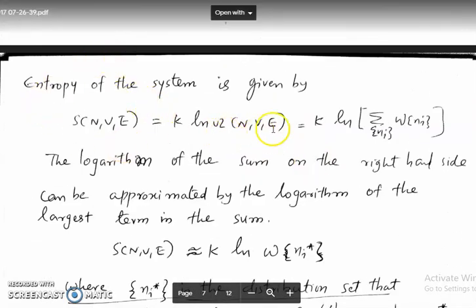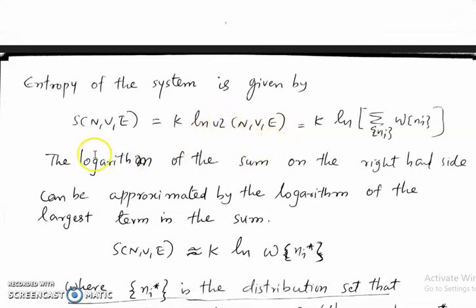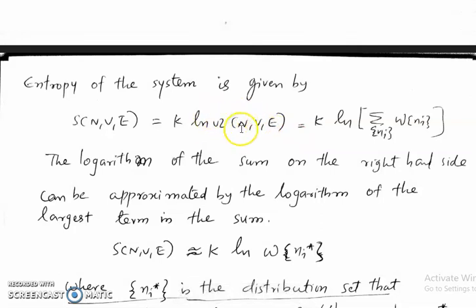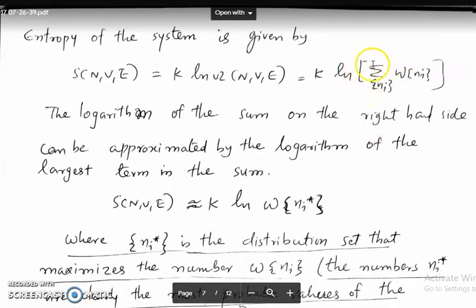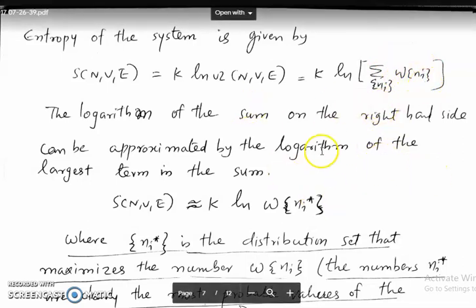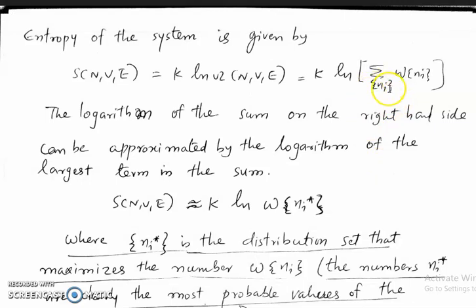Now let's find the entropy of the system. Entropy is given by S equal to K log omega — the first equation studied in statistical mechanics connecting thermodynamics with statistical mechanics. Omega comes from statistical physics and S is the thermodynamic entropy. So S equals K log of the summation over distribution sets of W(Ni). We are taking the log of this sum, which will have several terms corresponding to different distribution sets.